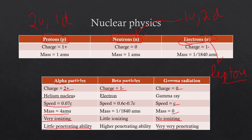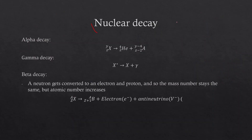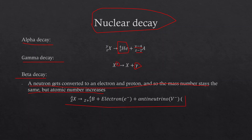For nuclear decay equations: in alpha decay, a helium nucleus is emitted — subtract 4 from the mass number and 2 from the atomic number. In gamma decay, an asterisk denotes the excited state of the element; it emits gamma radiation to lose excess energy without changing its mass or atomic number. In beta decay, a neutron converts into a proton and an electron — mass number stays constant but atomic number increases by 1. Note there are two types: beta-positive and beta-negative decay.